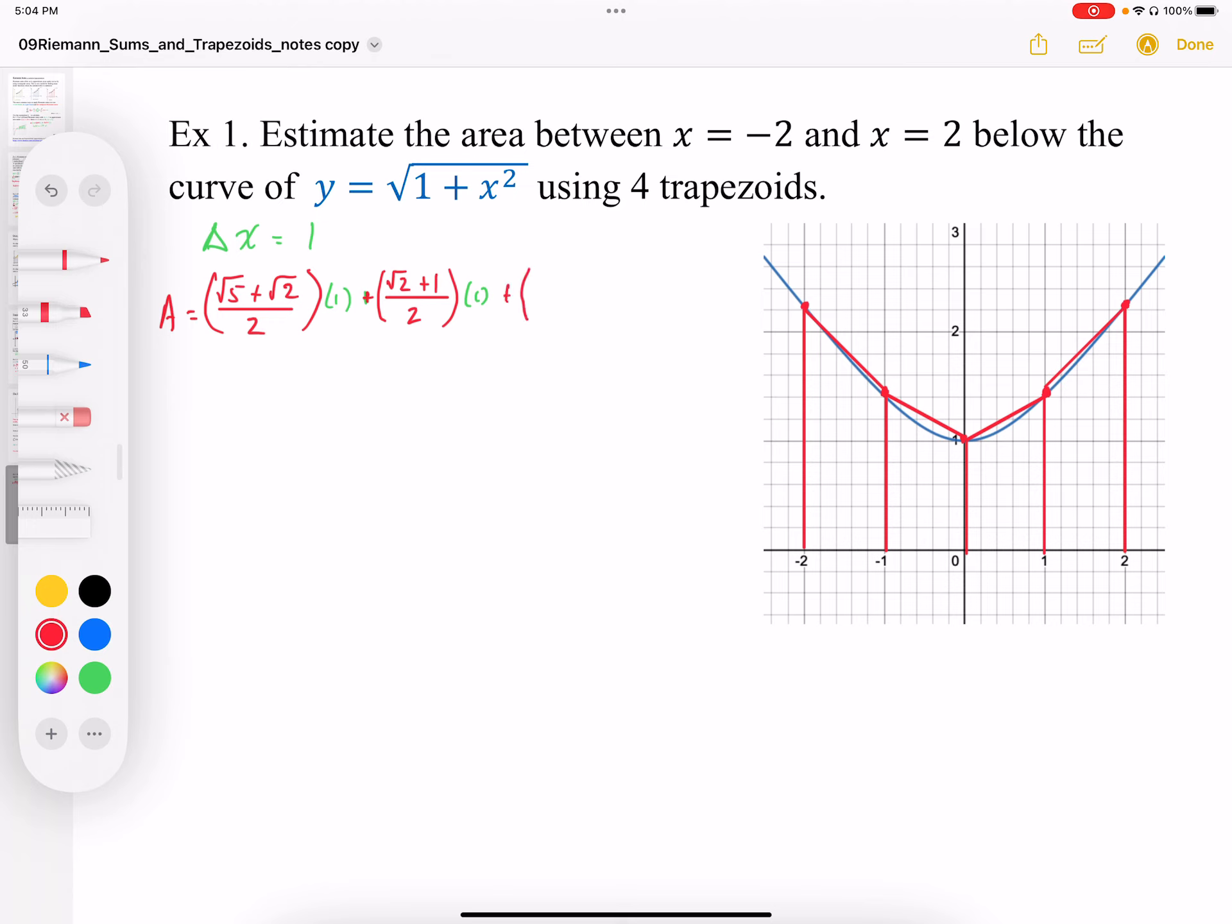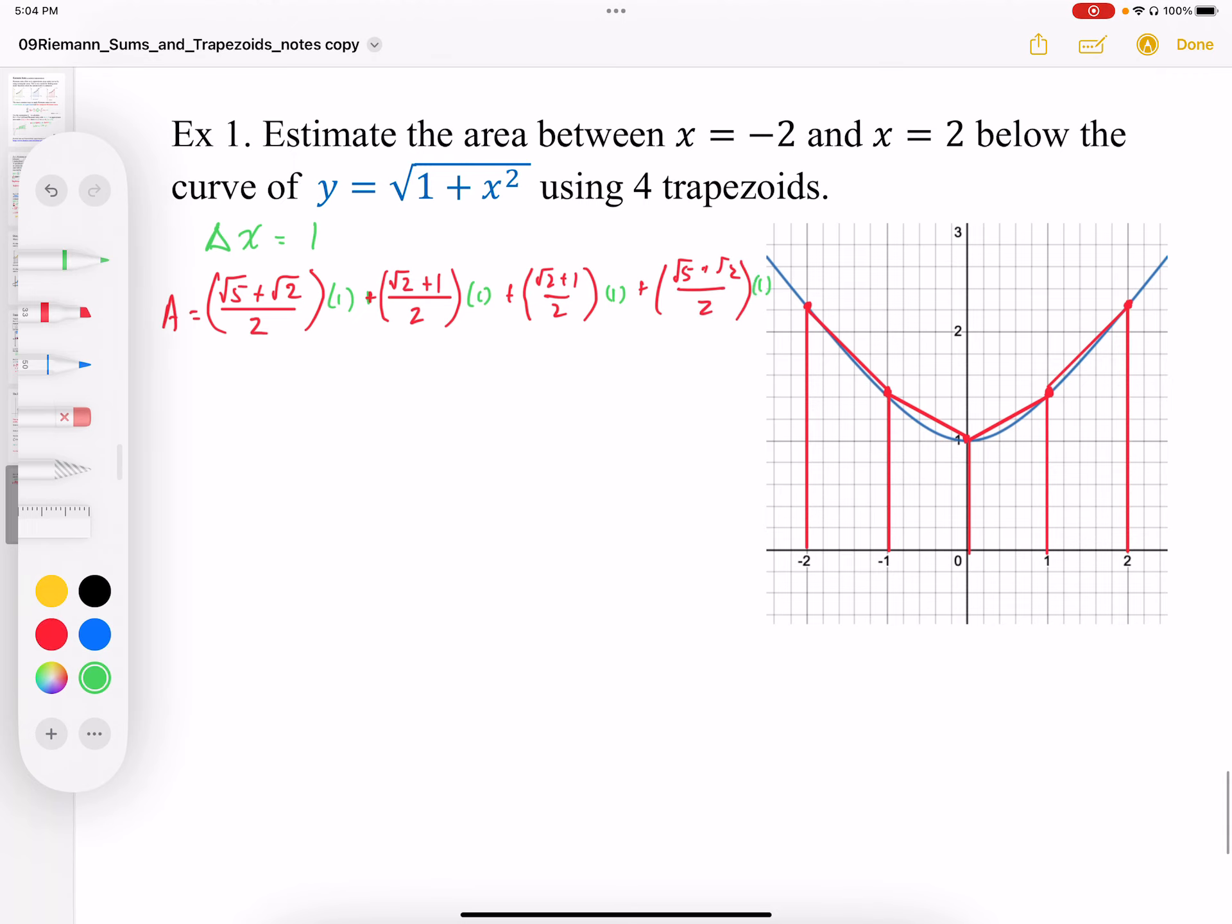And the other trapezoids are just symmetrical, so we end up with √2 + 1 over 2 times 1, plus the last trapezoid, which is √5 + √2 over 2 times 1. And that gives us our 4 trapezoids.